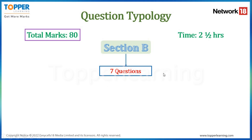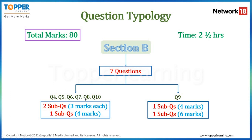Section B has seven questions divided into two groups. For Questions 4, 5, 6, 7, 8, and 10, each question has two sub-questions of three marks each and one sub-question of four marks. Question 9 is different: it has one sub-question of four marks and another of six marks. So six out of seven questions have the three-sub-question format, and one question has the four-plus-six format. This is the overall paper pattern for your Mathematics paper.